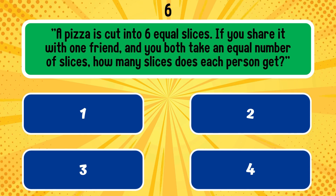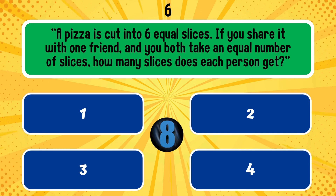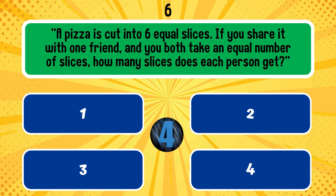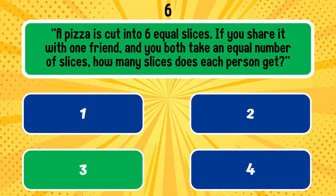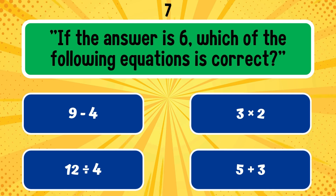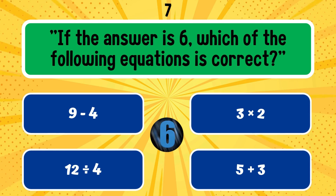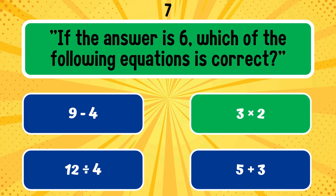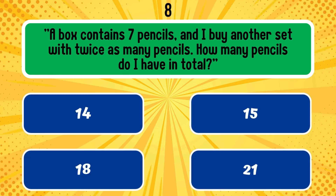A pizza is cut into six equal slices. If you share it with one friend and you both take an equal number of slices, how many slices does each person get? The answer is 3. If the answer is 6, which of the following equations is correct? The correct answer is 3 times 2.